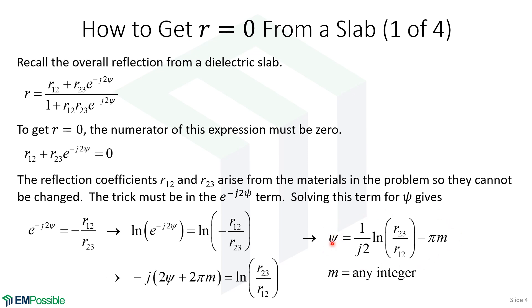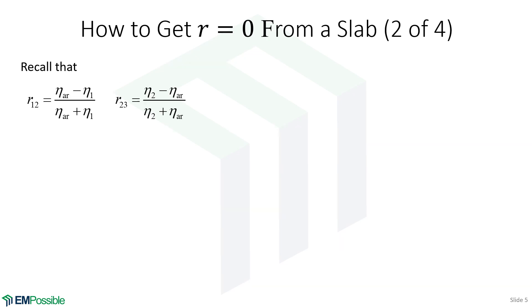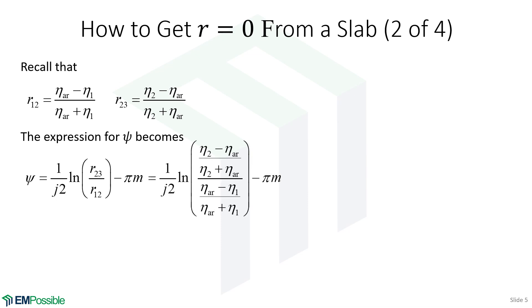Remember the two reflection coefficients now. We have medium 1 to the anti-reflection layer, and then we have medium 2 to the anti-reflection layer. We can plug those back into our equation for psi. So we just blindly put those in. We'll turn the crank and simplify that a little bit, and we end up with this sort of ratio of terms of different impedances.